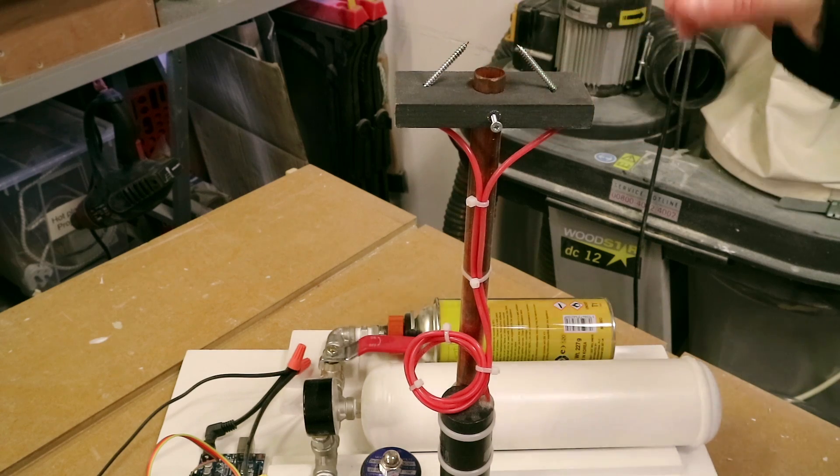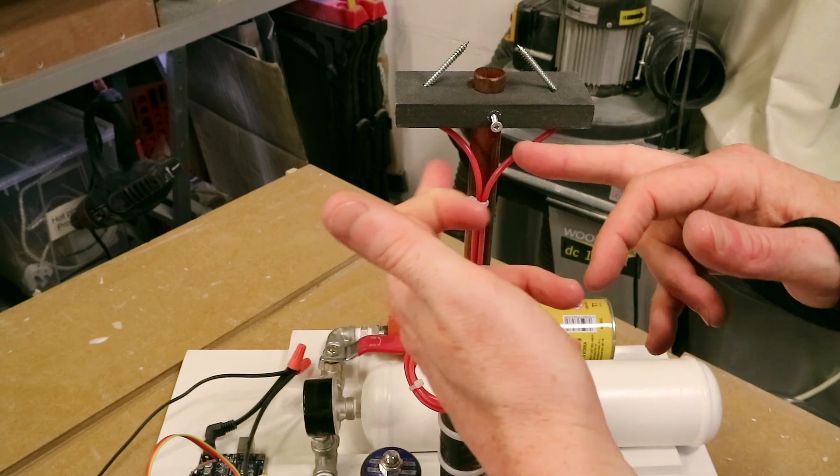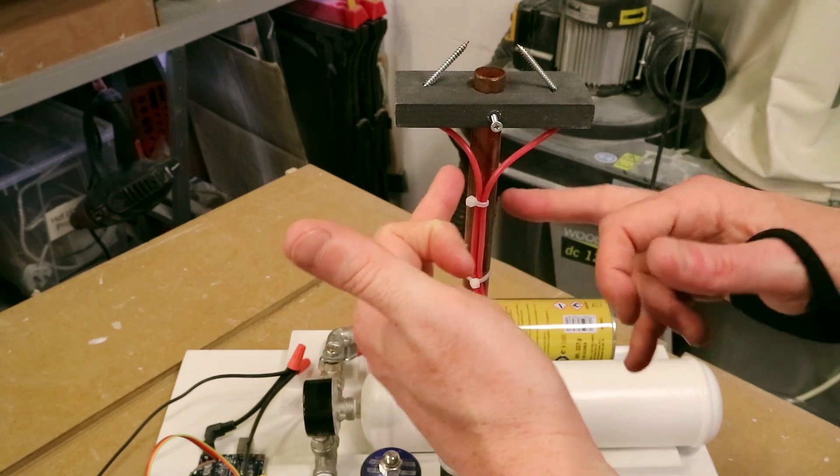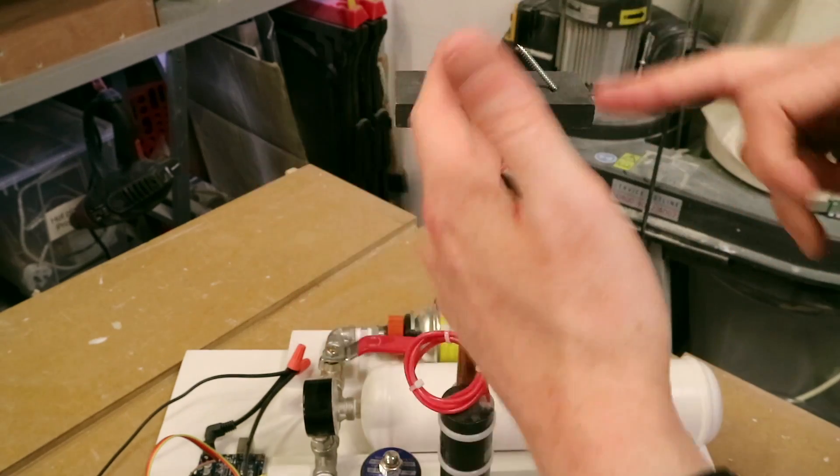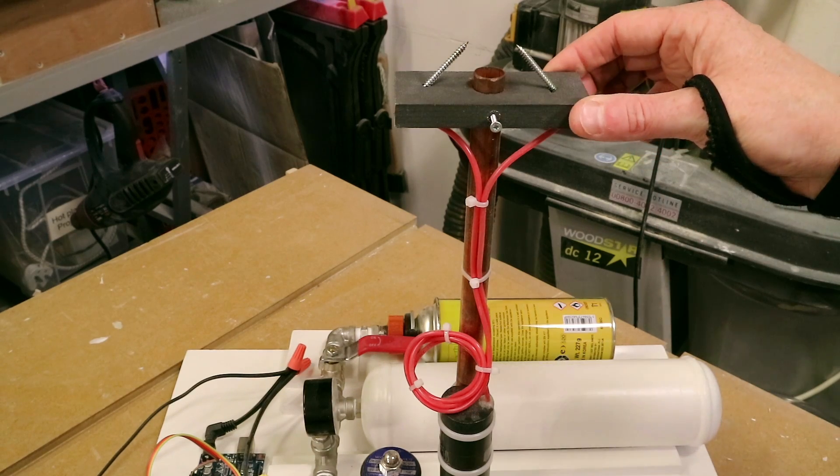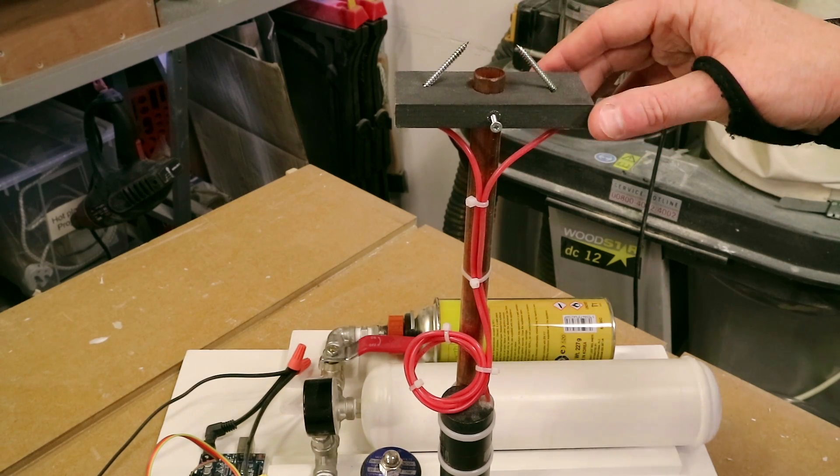The sparks, the electricity wants to jump and find the shortest route to ground. So if you try and mount these directly to the side of the copper pipe, they're just going to spark to the copper pipe, loop around to the other side and out the other wire, and it won't generate a spark of any usable nature. And so after trying out a variety of different things, this ugly monstrosity was the best method I came up with.